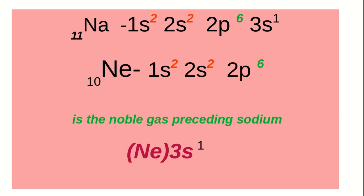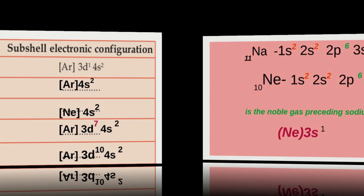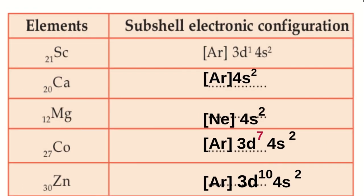Find out the preceding noble gas with the help of the periodic table and complete the table. In scandium, atomic number 21, subshell electronic configuration can be written as [Ar] 3D1, 4S2. In calcium, atomic number 20: [Ar] 4S2.